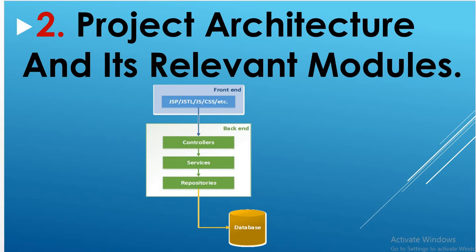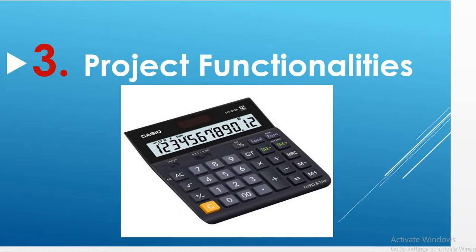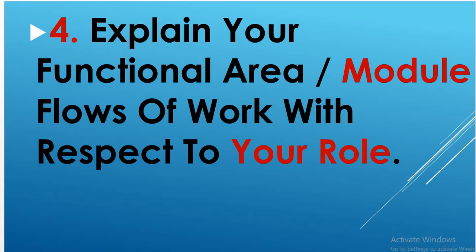The third step is to describe the project functionalities — what your project does. For example, if you are working on Amazon or Flipkart, you can say: a user can log in, search for a product, place an order, and add, delete, or update their address details. Describe the admin role as well. If you are working on a calculator project, describe its functionality: add, subtract, multiply, and divide operations.